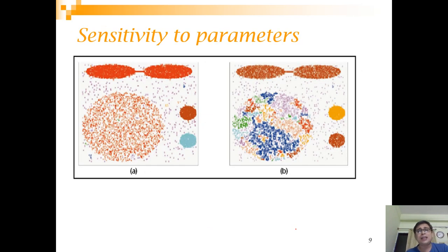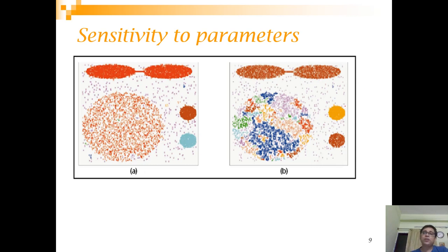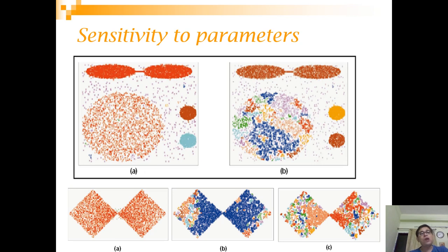Let's look at sensitivity to parameters. If you change epsilon — keeping it bigger — you get certain clusters. If you reduce epsilon, you get a different, possibly more distorted clustering pattern. Here's another example: with a reasonably good epsilon you see two clear clusters, but as you decrease epsilon, the clustering becomes more and more local until it is completely local. These parameters are the driving factors and must be fixed at the very beginning.